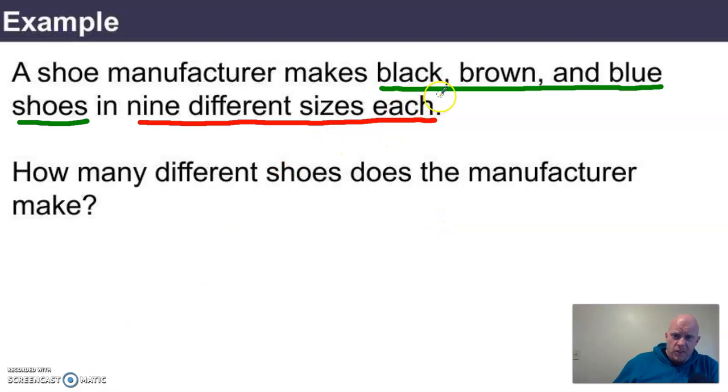So I want to think about this problem this way. I need to choose, I'm making blanks here to fill in. I need to choose a color of shoe. And then I need to multiply that number of ways I could choose a color by the number of sizes that are made. So what I want to think about is how many ways can I choose a color, and then once I've chosen a color, how many sizes can I choose?